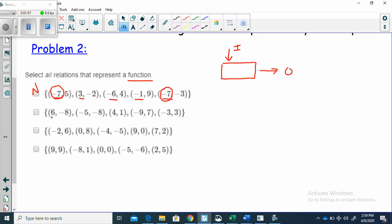Let's look at the x's here, our inputs. We have 6, negative 5, 4, negative 9, negative 3. Notice how none of these inputs repeat. So each input has its own output. This one is a function.